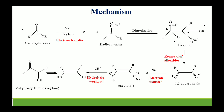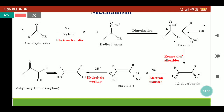Now coming to the mechanism part: we are taking the ester molecule as our reactant in presence of sodium metal. Because of the polarity of the carbonyl group, oxygen will take electrons and carbon will be positive. Since sodium is present it will provide electrons to the carbon and we will get a radical anion. Two molecules of ester give two radical anions, and they will couple together and dimerize to produce a di-anion.